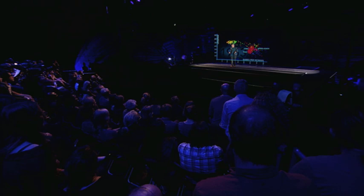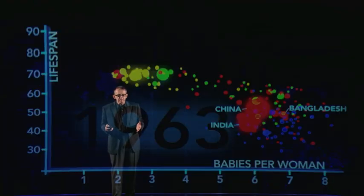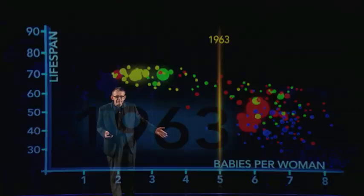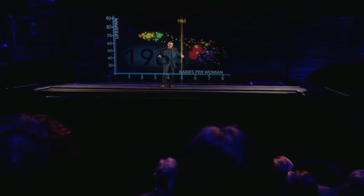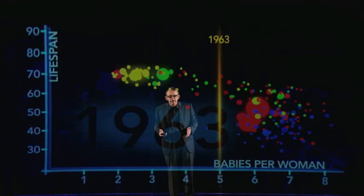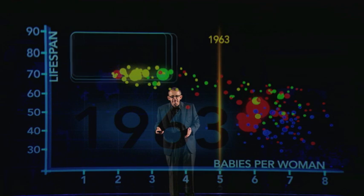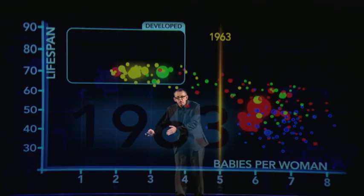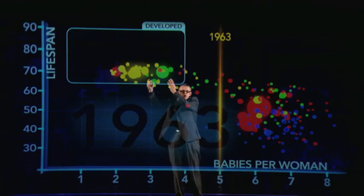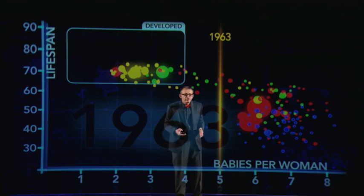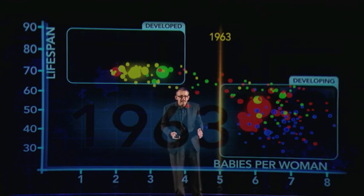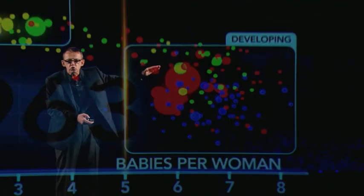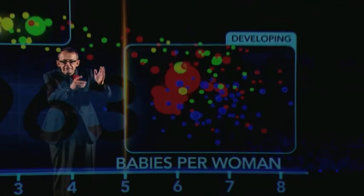In 1963, the average number of babies born per woman in the world was five. But it was a divided world. These countries over here — the developed countries — had small families and long lives. And then there were the developing countries over here, with large families and short lives. And very few were in between.